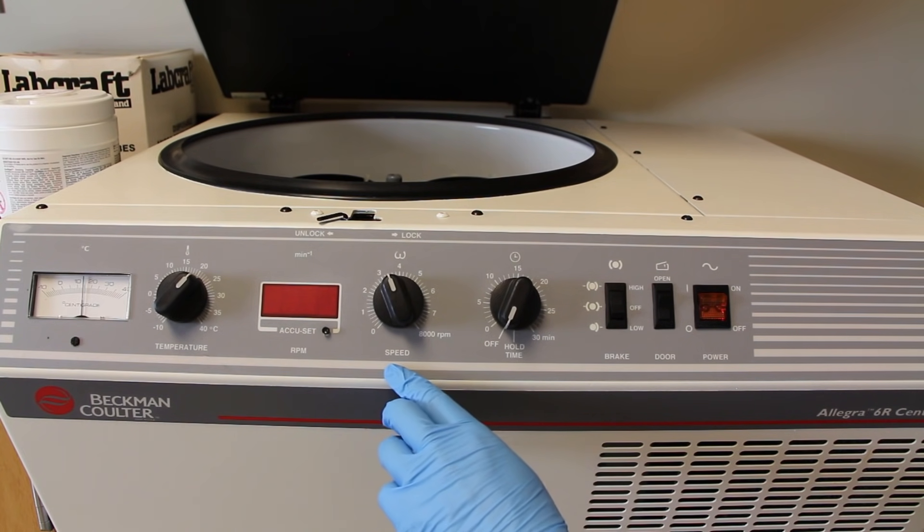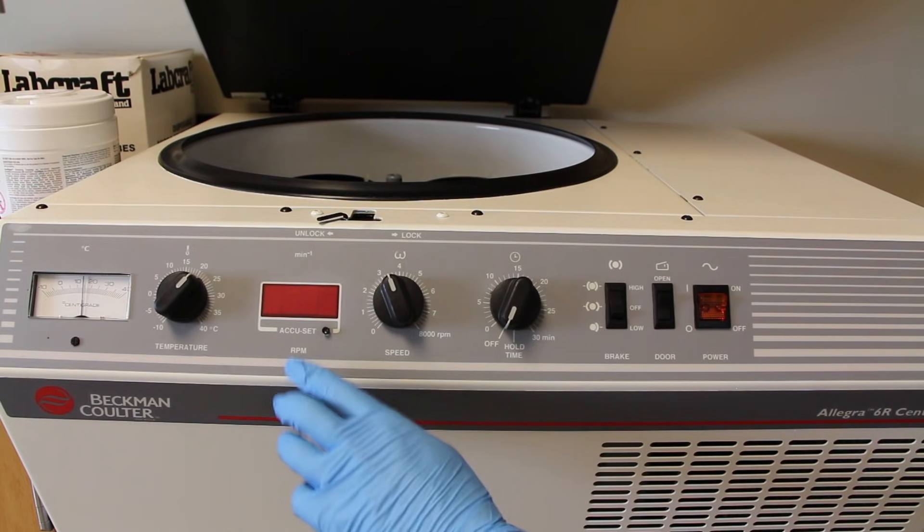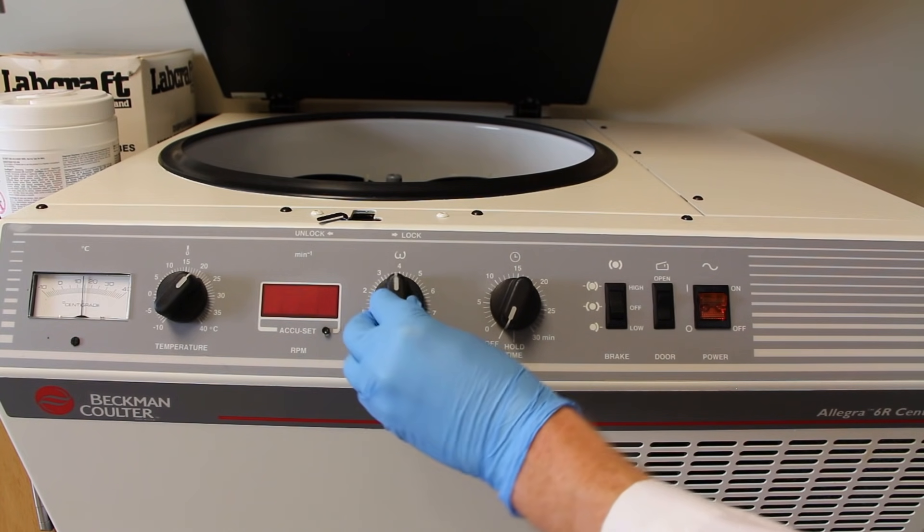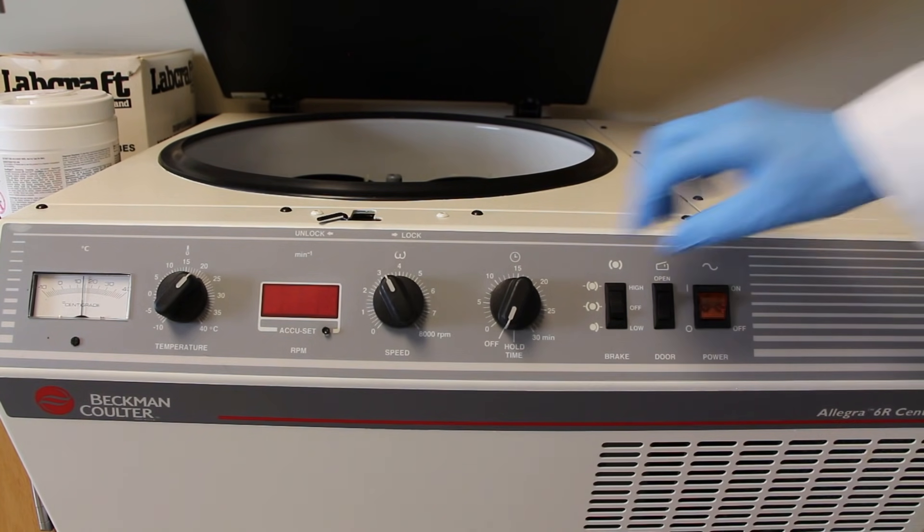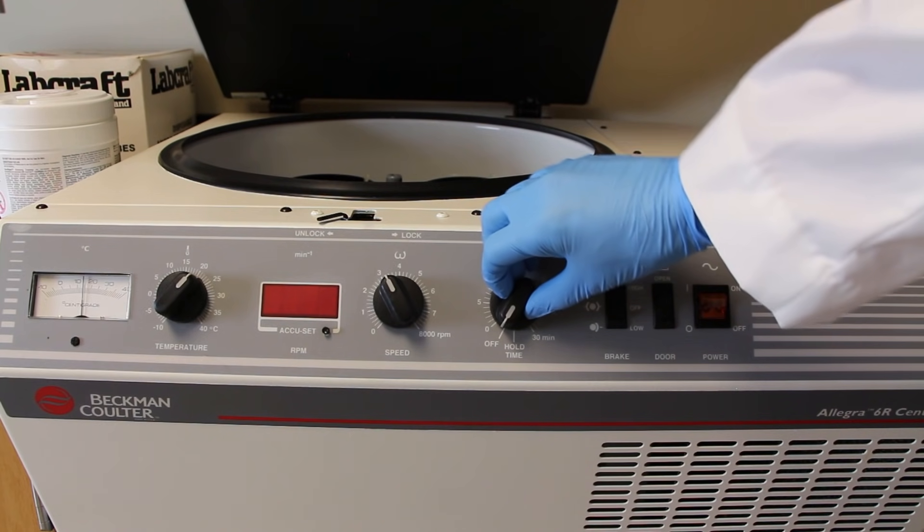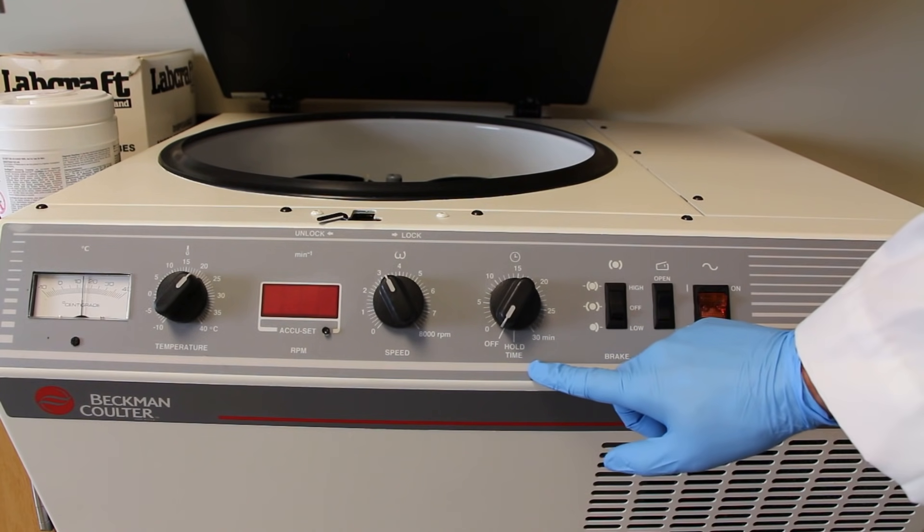The other things you can set are how fast it's going to spin. I'm going to spin it just beyond 3000 RPMs. You can also set the time of the spin, which is something that typically is between 10 and 15 minutes, and you can decide whether or not to have a brake applied or how heavily to apply that brake at the end of the centrifuge time period.